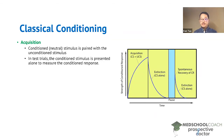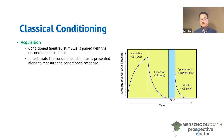Acquisition refers to the process when the conditioned or neutral stimulus is paired with the unconditioned stimulus — this is when the animal is learning to associate the conditioned stimulus with the unconditioned stimulus. When you present both stimuli together, you're going to get a response because of the presence of the unconditioned stimulus. To test for acquisition, you can present the conditioned stimulus alone in between the trials and see how much of a conditioned response you get.